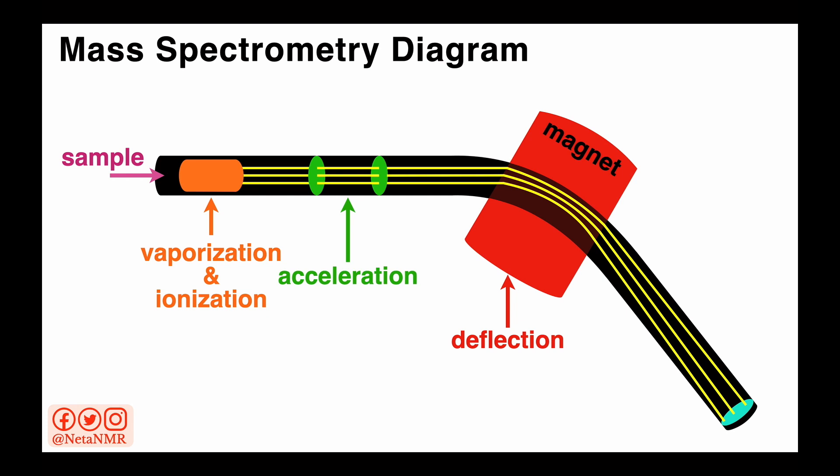Fragments of the same charge but different masses will be deflected differently by the magnetic field. Molecular fragments or isotopes of larger masses will be deflected less and those of smaller masses will be deflected more. These differently deflected isotopes will hit the detector in different regions of the detector.